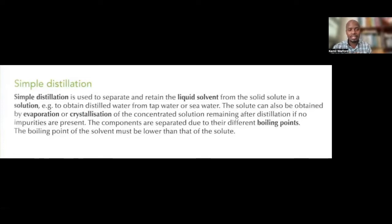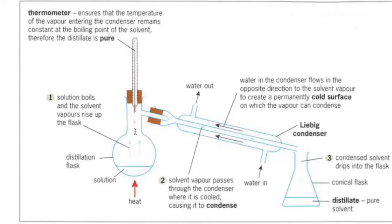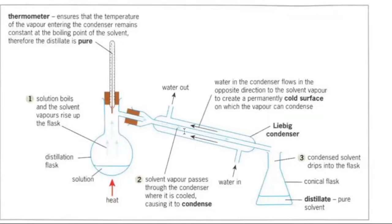All right, so this is where we're kicking off. So simple distillation. Our diagram looks something like this, where we have our distillation flask and it's been heated. The solution boils and the solvent vapors rise up in the flask. The only escape route there is that neck, that tube.